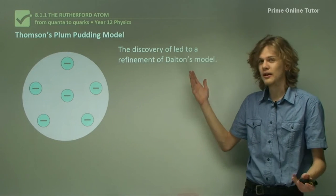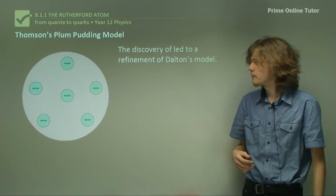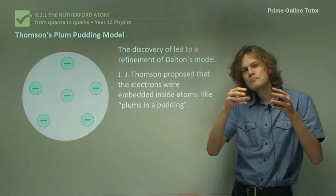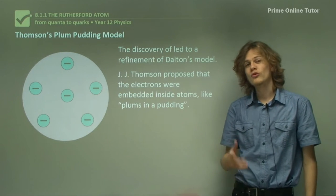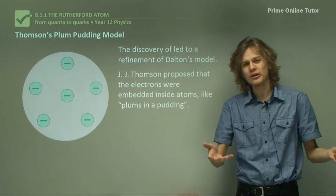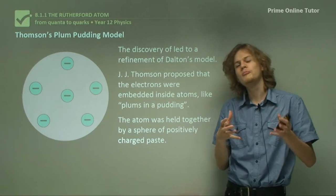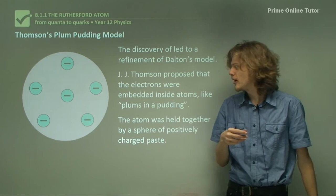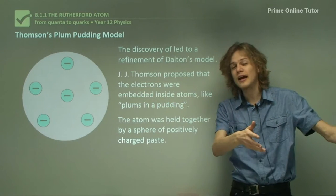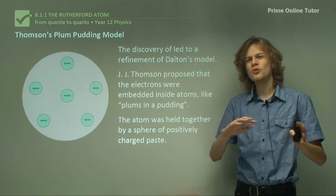So the discovery of the electrons led to a refinement of Dalton's model. That's the base that this model is building on. As we can see, the proposition of J.J. Thompson is that the electrons were embedded inside the atom. So this is sometimes called the plum pudding model, because you can say that the electrons inside the atom are a little like plums in a plum pudding. We can see that it's all held together in a big sphere of positive paste that sticks them all together. And so you can imagine that under the right circumstances, you'd be able to get these electrons coming out of the atom and creating cathode rays. And that's how J.J. Thompson explained it. But it's still not quite accurate.